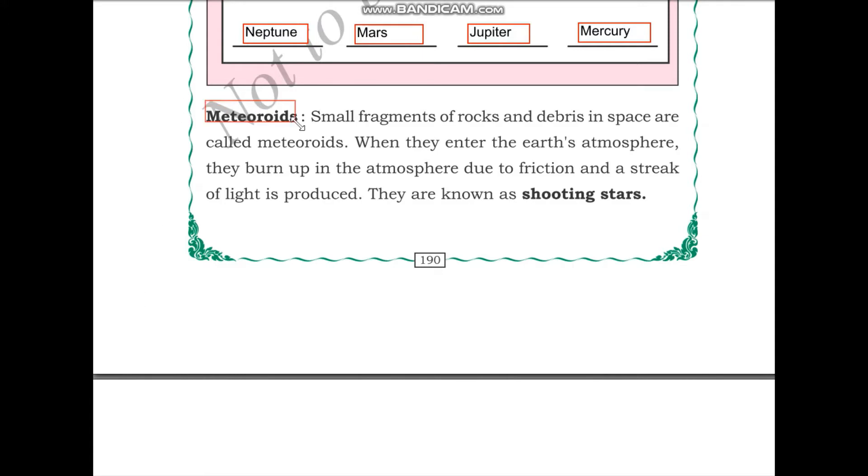Meteoroids are small fragments of rock and debris in space called meteorites. Meteoroids are small fragments of rock and debris. Debris is nothing but small dust particles.